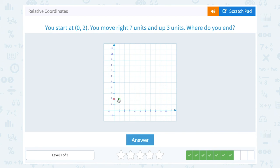I can just count 1, 2, 3, 4, 5, 6, 7 to the right, and up 1, 2, 3.